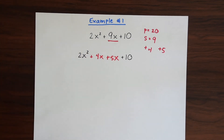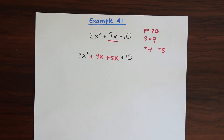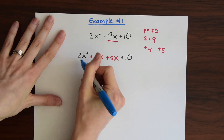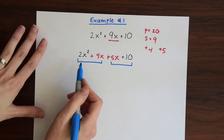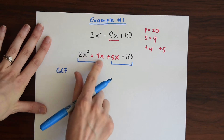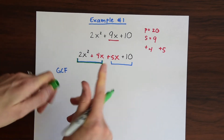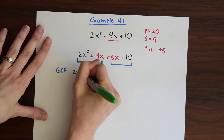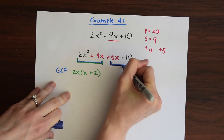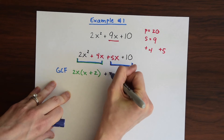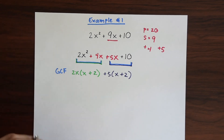We didn't break any rules — we're just manipulating the problem. Now we're going to take the GCF. We're going to split this into two halves and take the GCF of each section. So for the first half, the GCF is 2x, and we're left with x plus 2. And then on the second half, we can take a 5 out, and we're left with x plus 2. Notice that we have a common factor of x plus 2 in both sections.